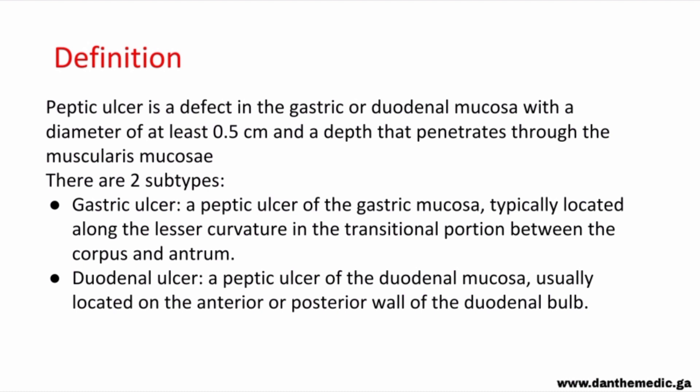Peptic ulcer can be defined as a defect in the gastric or duodenal mucosa with a diameter of at least 0.5 cm and a depth that penetrates through the muscularis mucosa. This is important when differentiating erosions from ulcers, because erosions are more superficial than ulcers, and ulcers in general involve damage of the submucosa — extending beyond the mucosal layer.